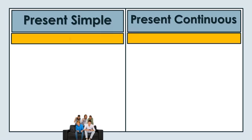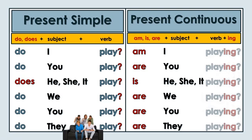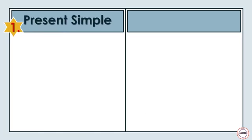Interrogative forms. Present Simple: Do I play? Do you play? Does he play? Do we play? Do you play? Do they play? Present Continuous: Am I playing? Are you playing? Is she playing? Are we playing? Are you playing? Are they playing?